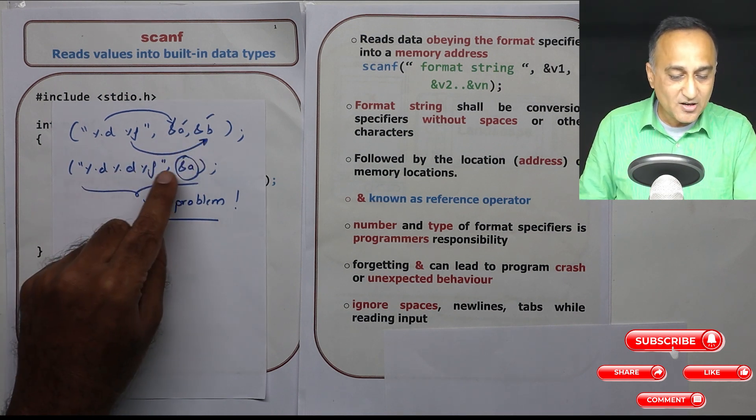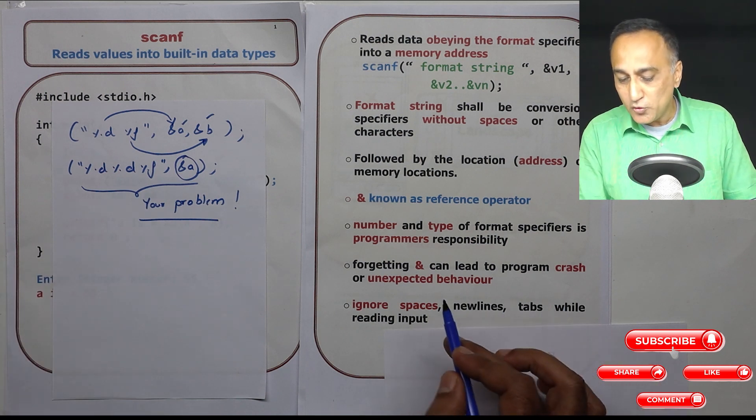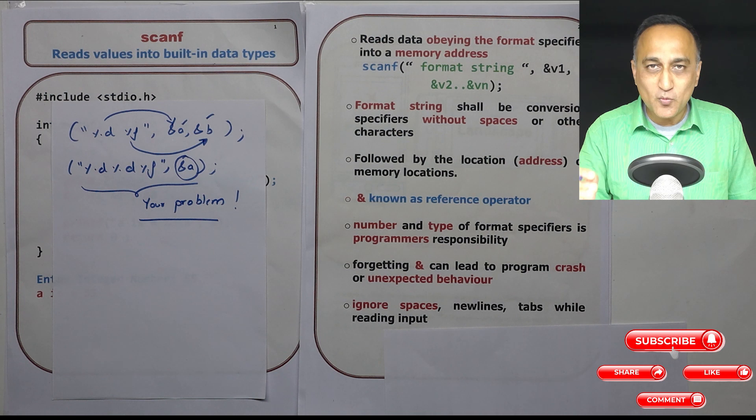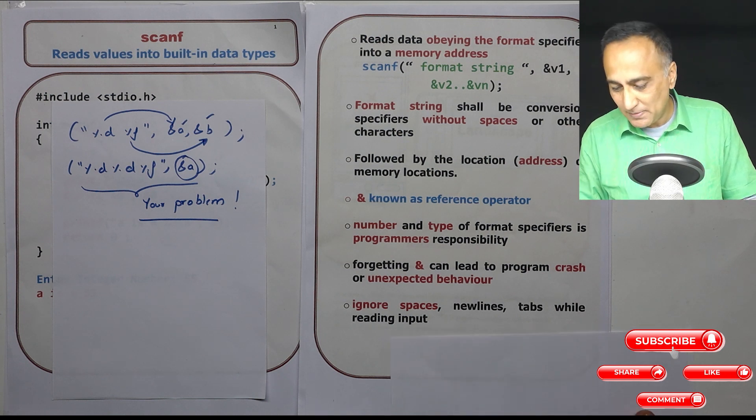Forgetting the address here or here is going to lead to unexpected behavior or your program is going to crash. It is the programmer's responsibility to deal with it. C gives you a lot of freedom and it is your responsibility to use that freedom responsibly. It assumes you know what you're doing which is not the case when we're learning programming.